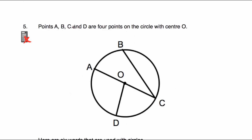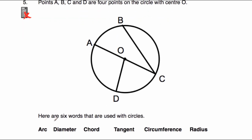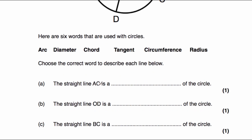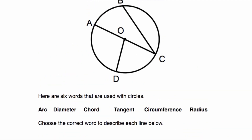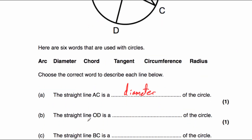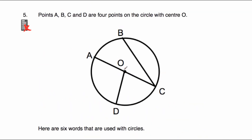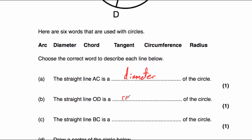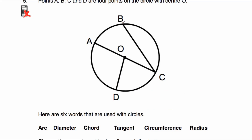Question five tells us that points A, B, C, and D are four points on a circle with centre O, and gives us six words: arc, diameter, chord, tangent, circumference, and radius. Part A: the straight line AC goes from one side of the circle to the other passing through the centre, so AC is a diameter. Part B: the line OD goes from the centre to a point on the circle, so OD is the radius. Part C: the line BC goes from one point on the circle to another without passing through the centre, so BC is a chord.